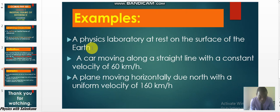Or that I have a car moving along a straight line, the direction is not changing, with a constant velocity of 60 kilometers per hour. This is also an inertial frame of reference. The velocity is constant.